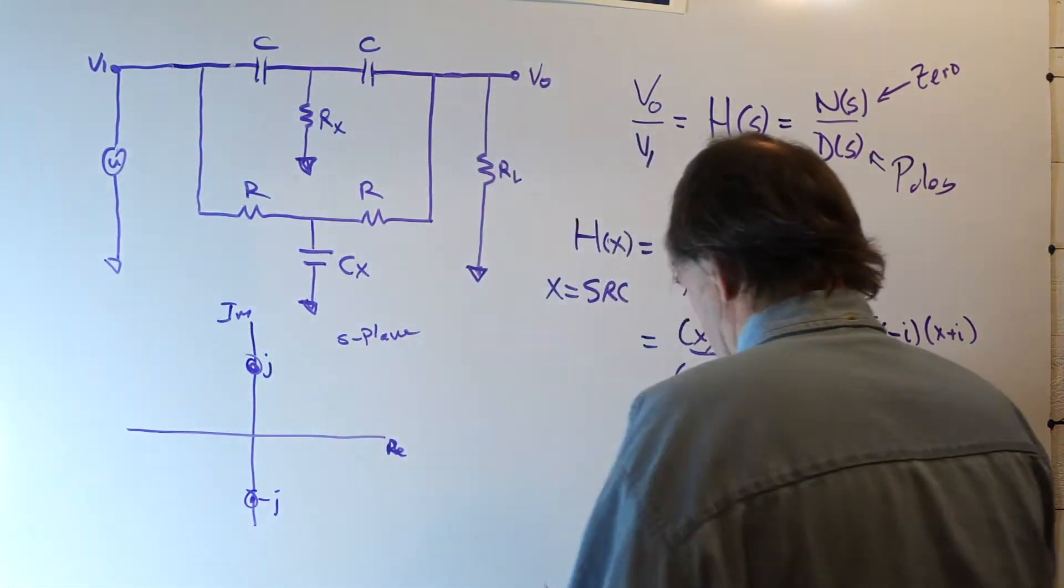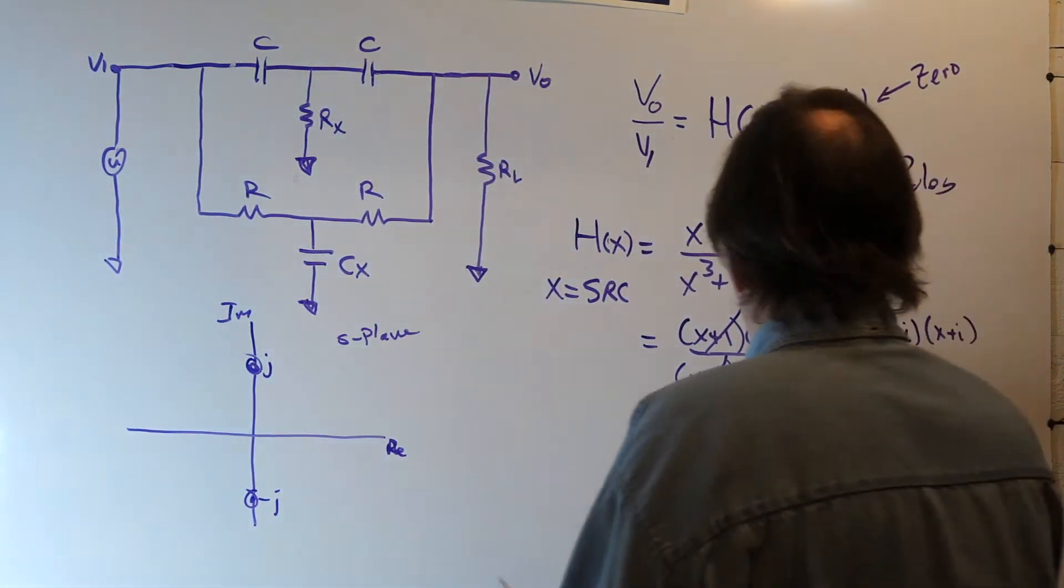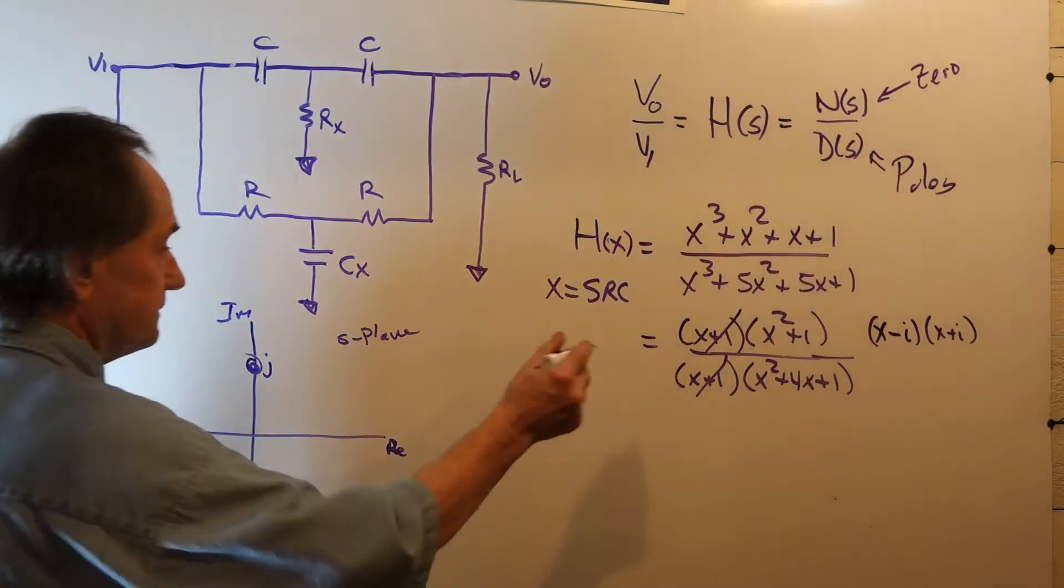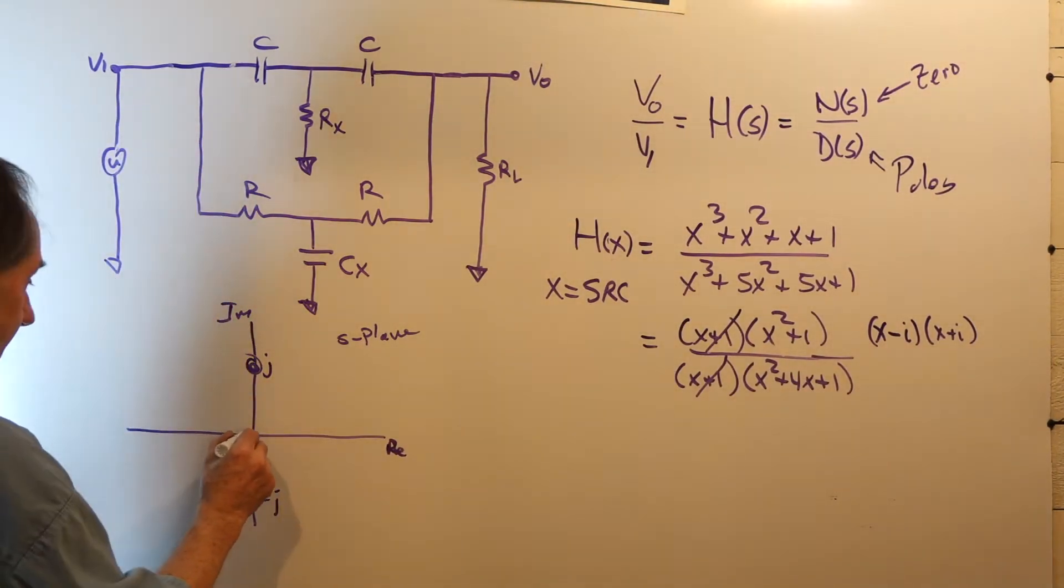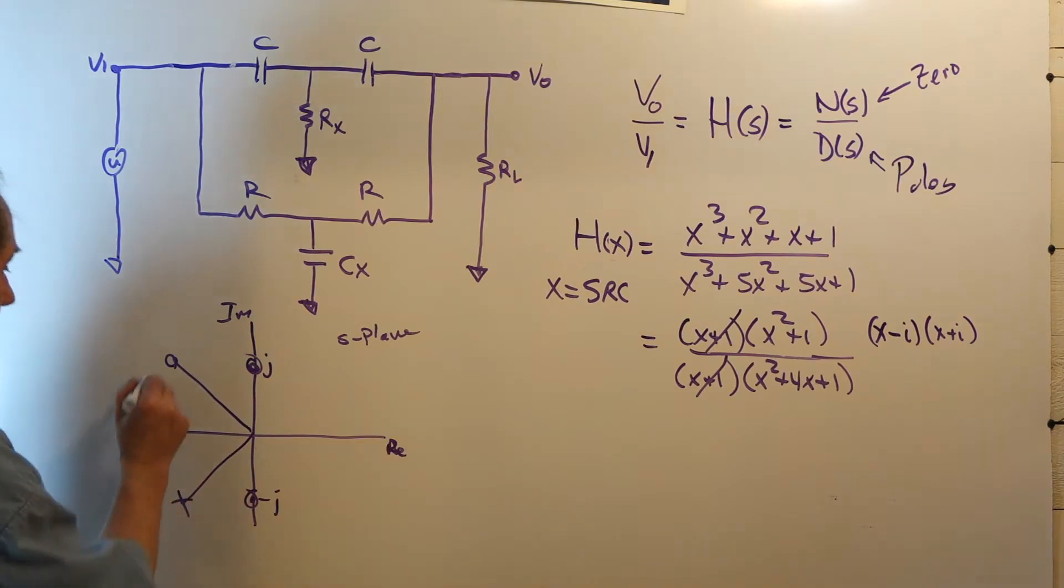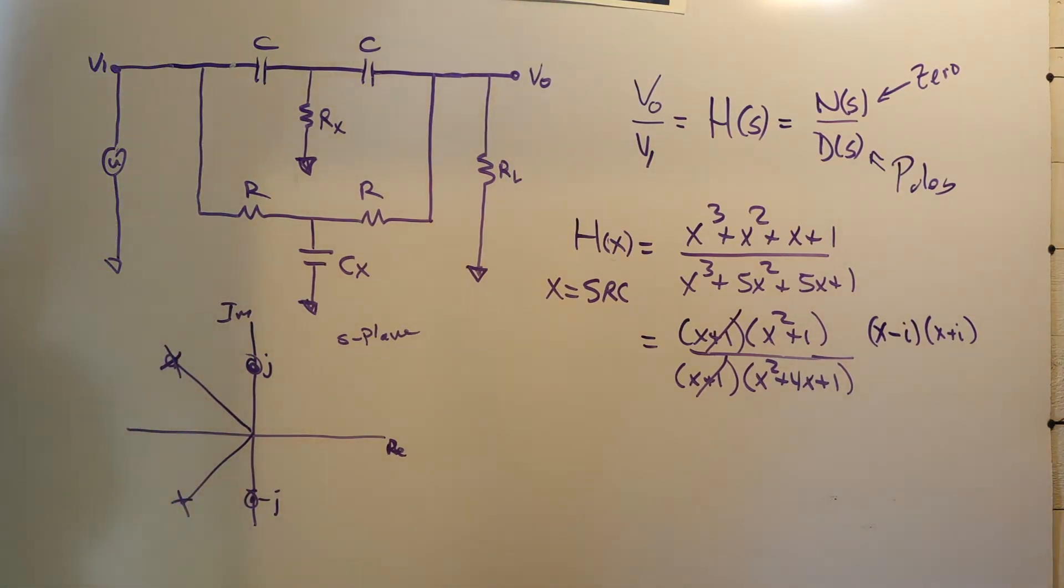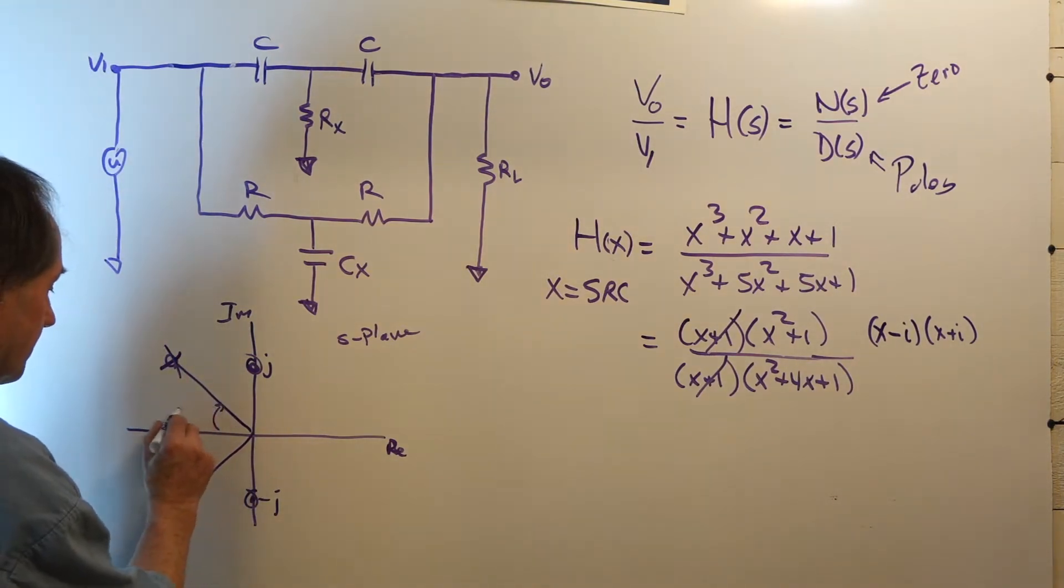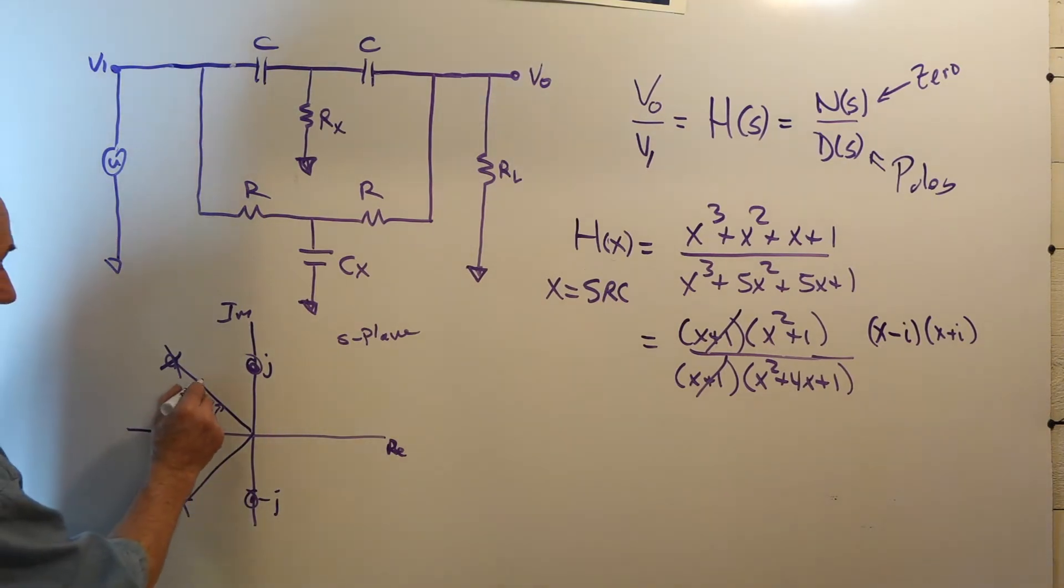And if you were to look at this, these are poles, marked by X's. And these are at 40.89 degrees with a magnitude of square root of 7.